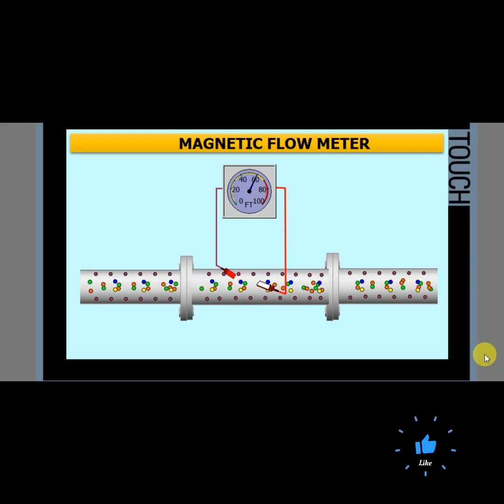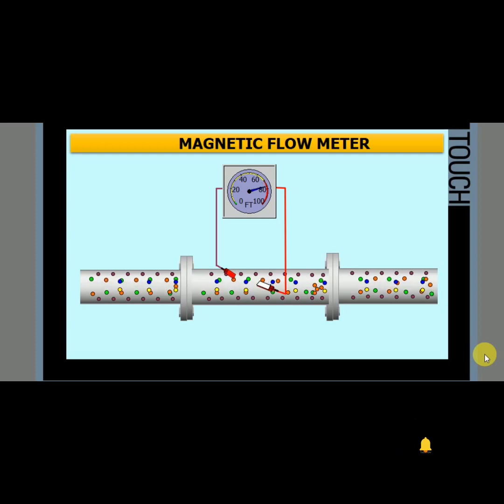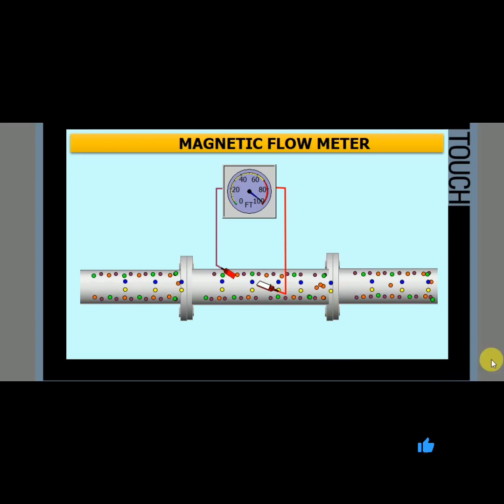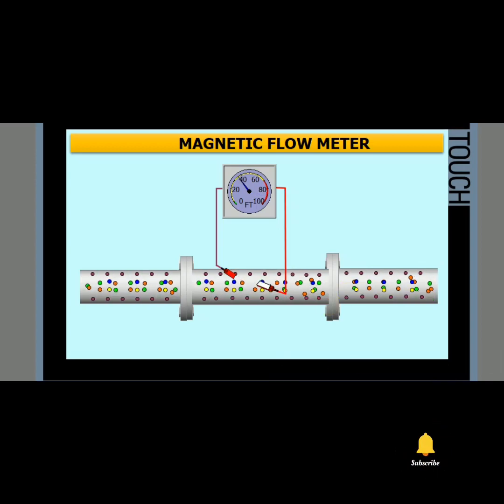We will explain how they work, when to use them, and what needs to be specified to select the proper sensor for your application. Magnetic flow sensors are often called mag meters, and we will refer to them using this abbreviation.